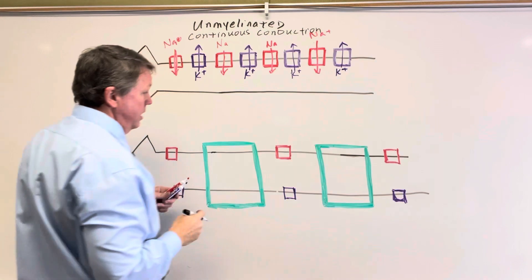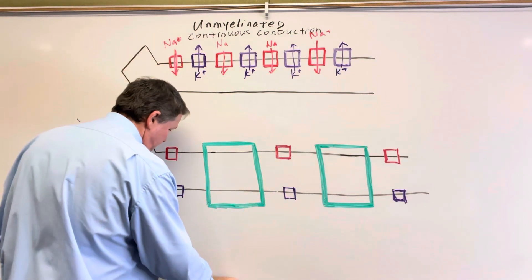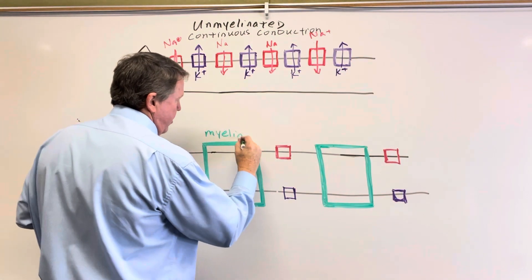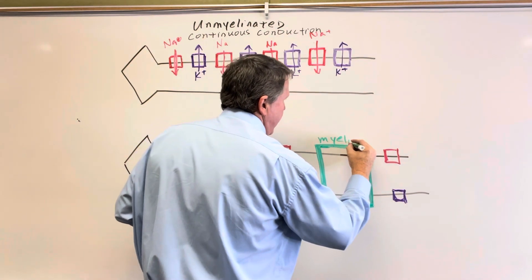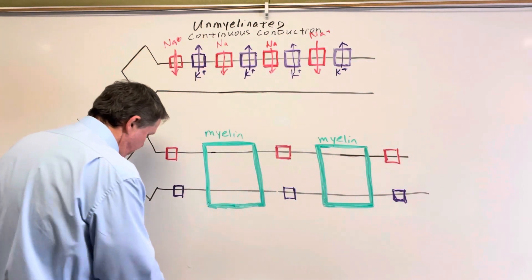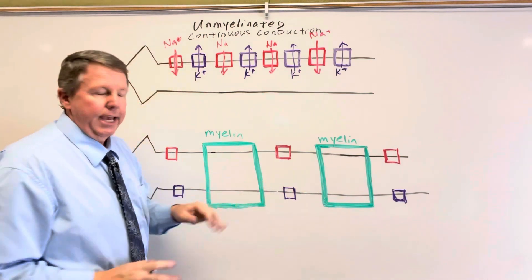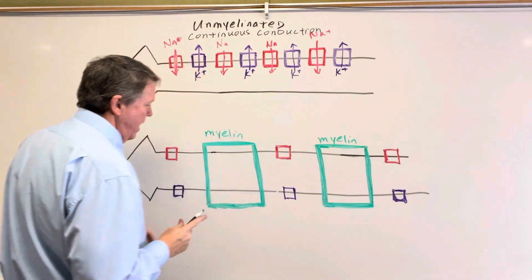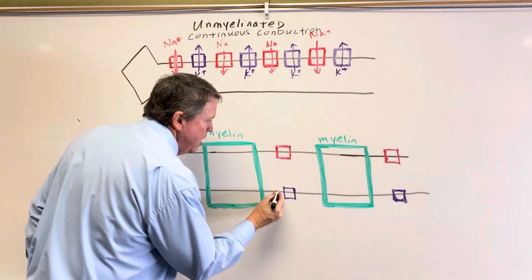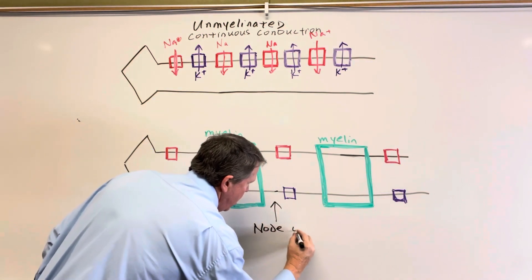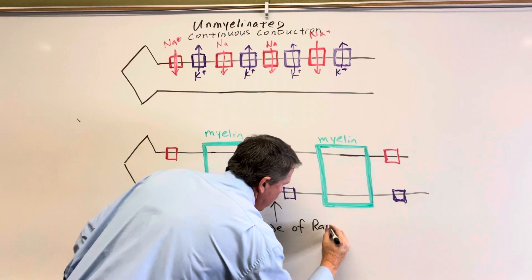That's continuous conduction. Now we're going to look at a myelinated axon. It has myelin on it. Between the myelin, we have spaces going down the whole axon. These spaces between the myelin — we're going to call these nodes of Ranvier.